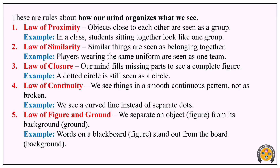These are the rules about how our mind organizes what we see. We will see how our mind organizes things. The first one is the Law of Proximity. Proximity means objects close to each other are seen as a group. Objects close to each other are seen as a group — that is proximity.